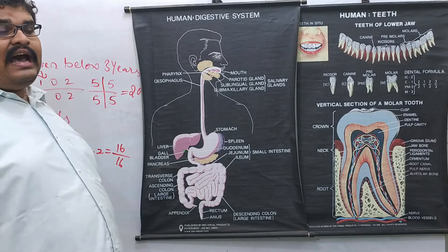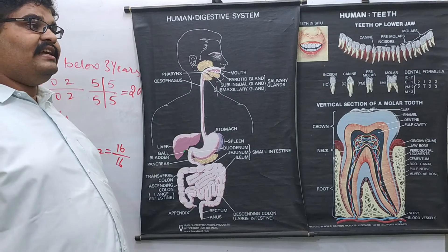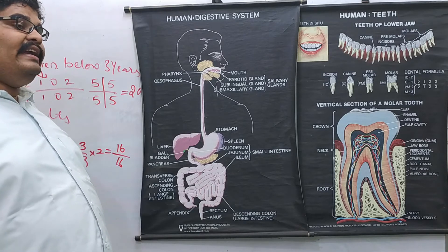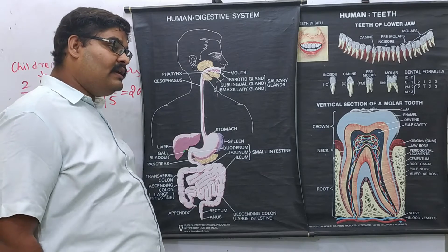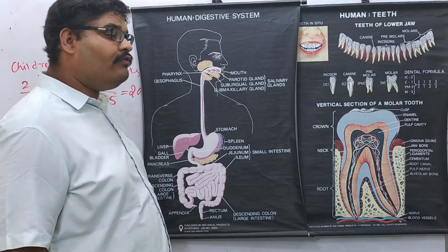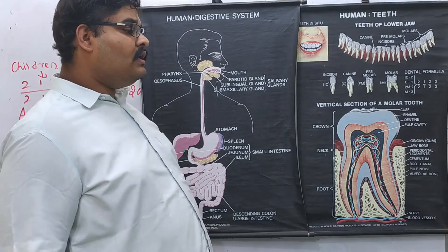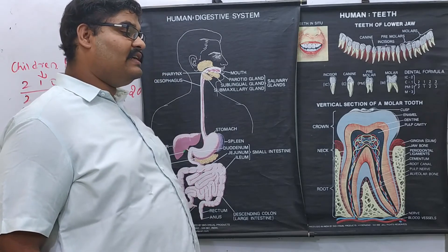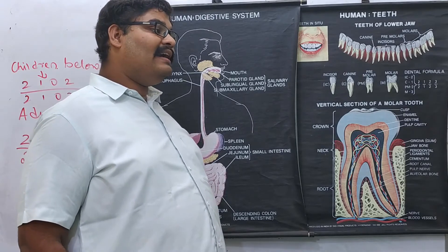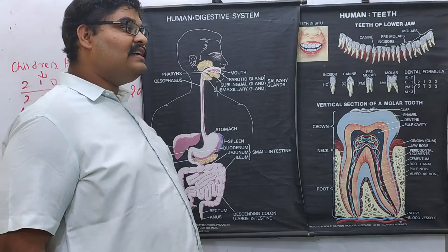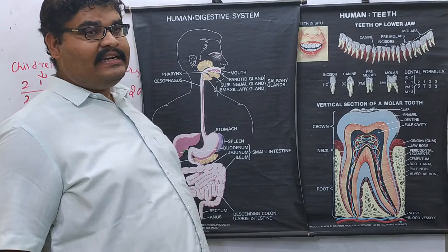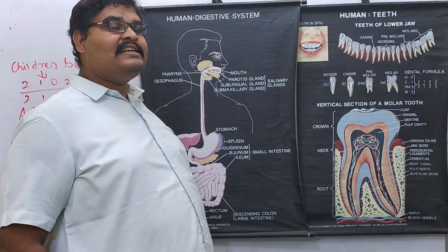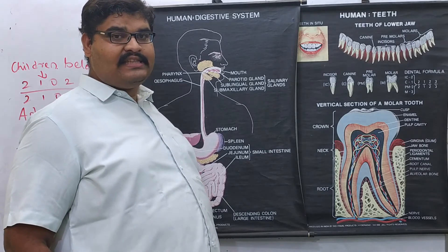The tongue is a highly muscular structure attached to the lower jaw. It is responsible for thorough mechanical digestion of food. Upon this muscular structure there are many bud-like structures called taste buds. In different regions of the tongue we sense different tastes.